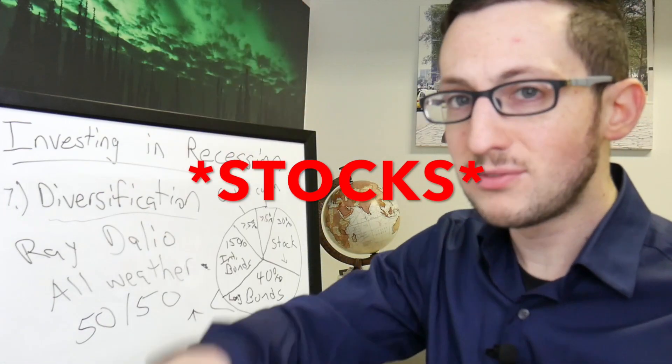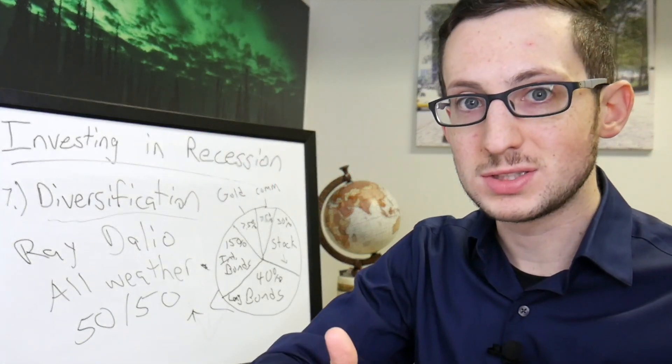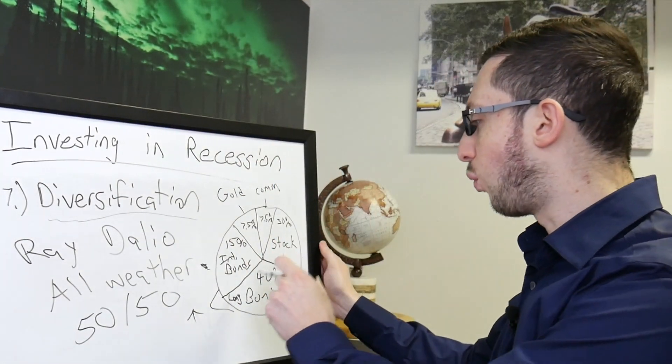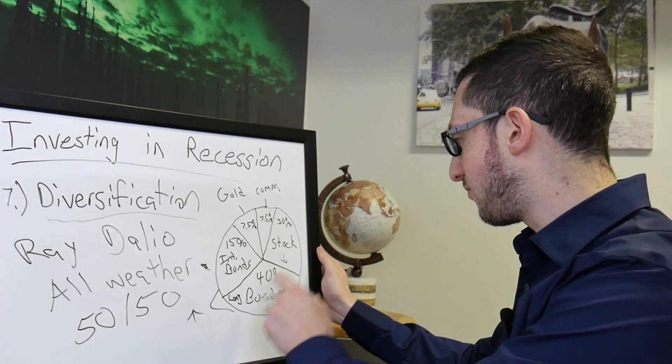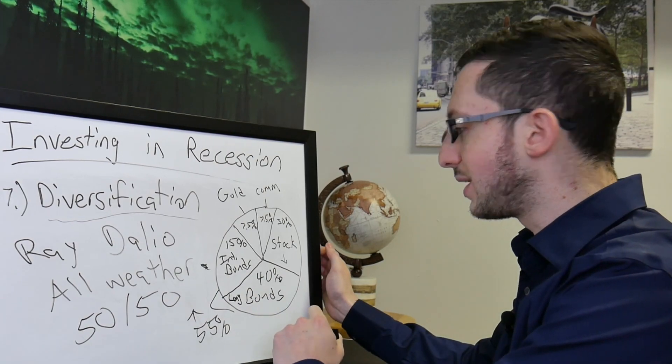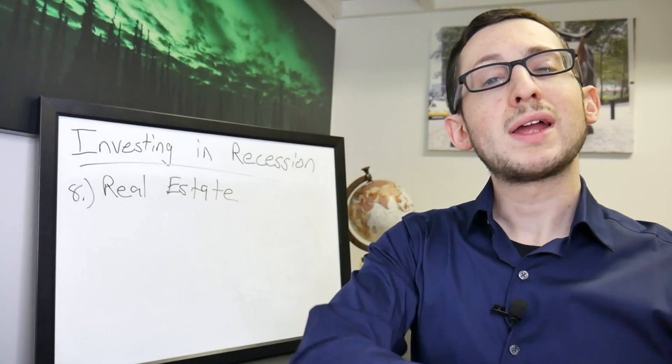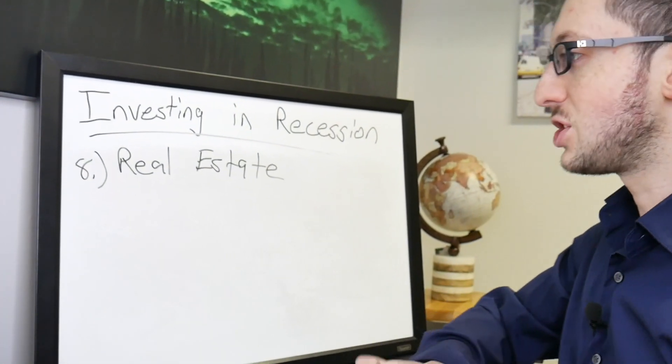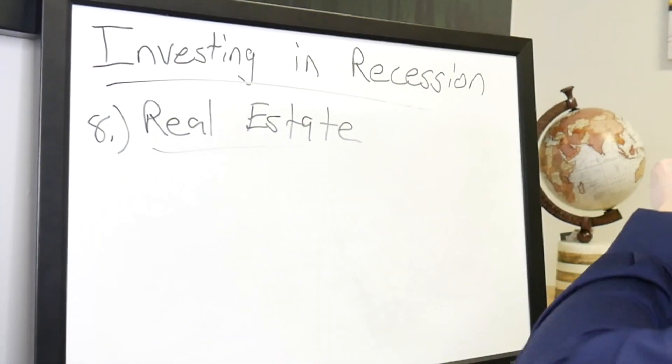So when bonds drop heavily you need a lot more bonds to hold that up, which is why he has 55% of the portfolio in bonds. Number 8 way to invest during a recession is hey real estate.